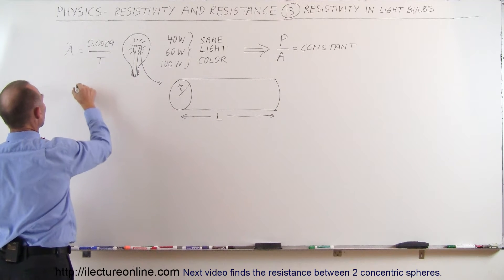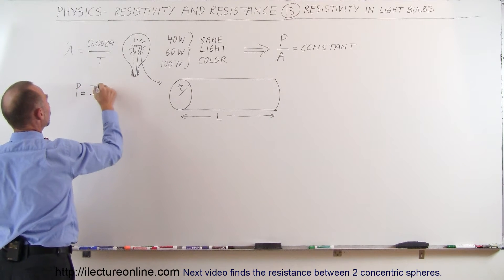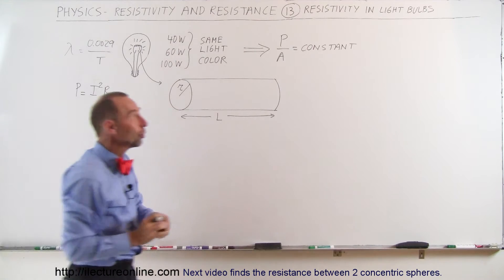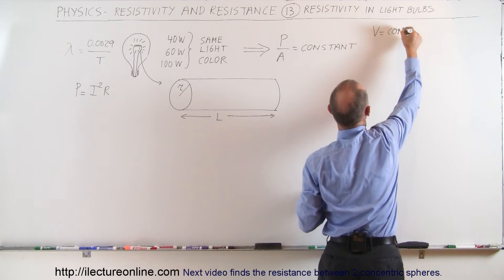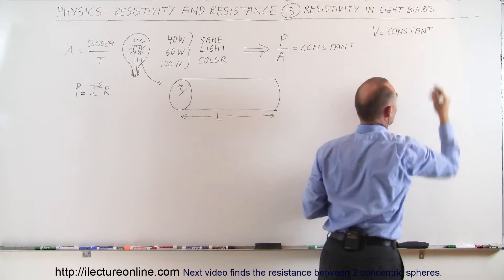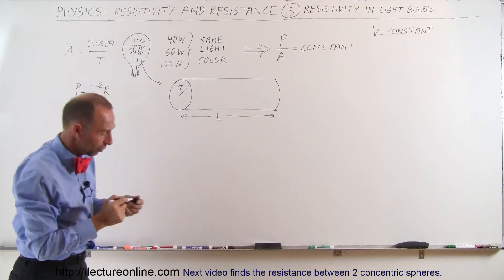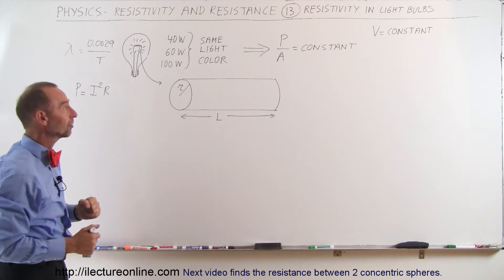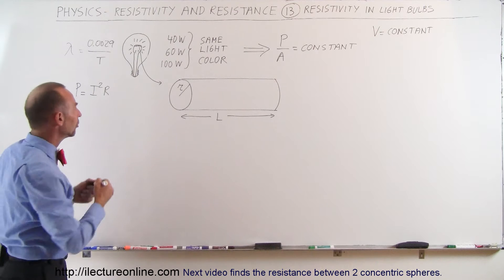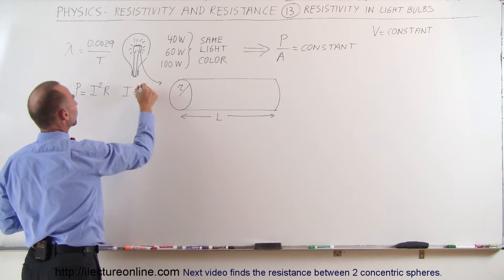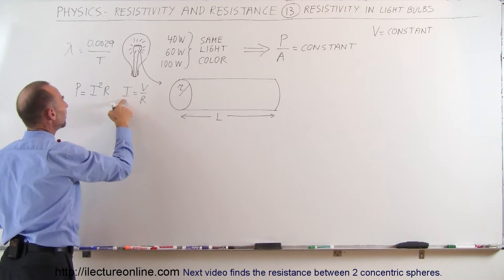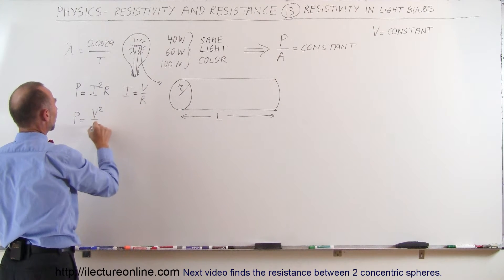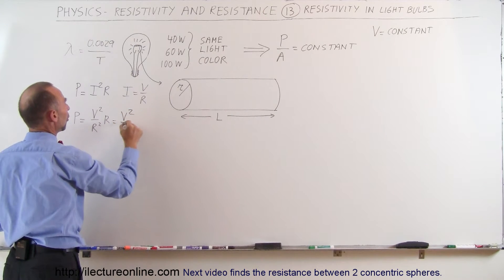The power consumed by any wire is always equal to I²R. But that's not a good form for us to use because the voltage will always need to be constant. When you plug in a light bulb, the voltage in your home is always going to be about 117 volts — somewhere between 110 and 120 volts in the United States; most of the rest of the world uses 220 volts. So we have to change this equation to use constant voltage. From Ohm's law, I = V/R, so replacing I by V/R, the power is V²/R² times R, which equals V²/R.